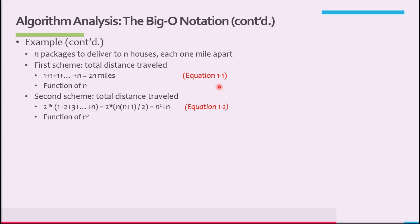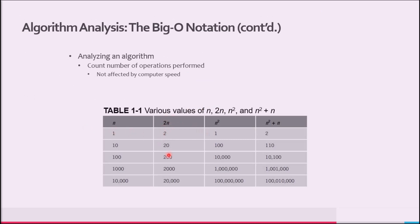In equation 1-1, the distance traveled is a function of n. In equation 1-2, for large values of n, the term n² becomes the dominant term, and the term containing n becomes negligible. In this case, we say that the distance traveled is a function of n². Table 1-1 shows various values of n, 2n, n², and n² + n, evaluating equations 1-1 and 1-2 for certain values of n.